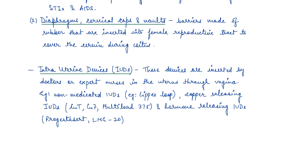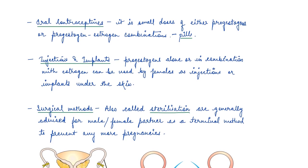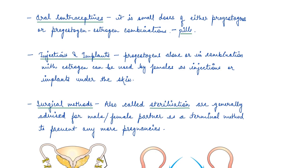The next type is oral contraceptives — also called the pill. These are very small doses of either progestogens or a progestogen-estrogen combination, taken on a daily basis or after coitus to prevent fertilization. They help prevent pregnancy. Additionally, progestogens alone or in combination with estrogen can be used as injections or implants under the skin to prevent fertilization.